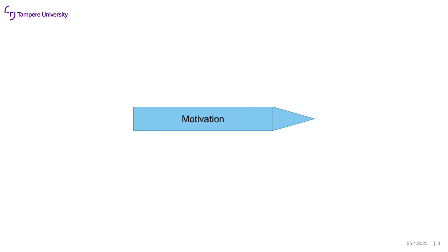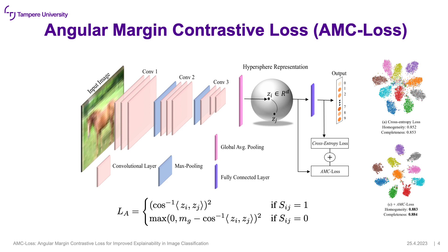Let's first start with the motivation. In the image classification problem, convolutional networks are normally used to extract features and then a classification layer is added at the end. Cross entropy loss is applied between the estimated class and the ground truth. However, researchers have explored many other auxiliary losses such as angular margin loss. This loss tells that if images are from the same class, the angular distance of those features should be minimized. If images are from different classes, features should have at least an angular distance margin. From the feature distribution figures on the right side, we can see that with AMC loss, intra-class features are more compact and inter-class features are more separable from each other.